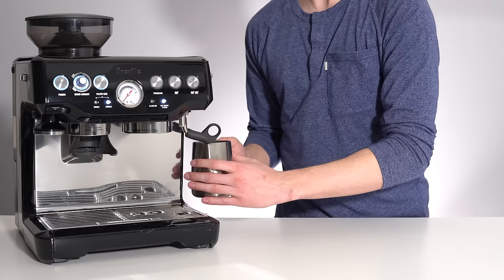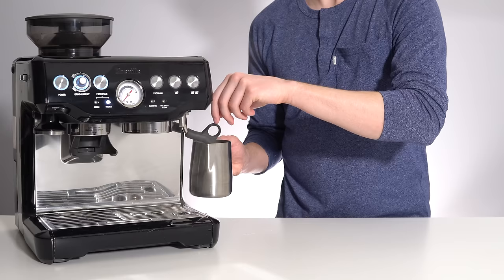However you do it, once you've reached that temperature, turn off the steam to stop the vortex, remove the steam wand, and if you're using milk, immediately purge and wipe down the wand.